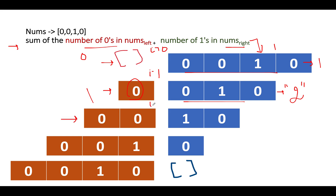Making the division at i equals 2, the left sub-array has [0, 0] and the right has [1, 0]. The number of zeros in the left is 2 and the number of ones in the right is 1. So 2 plus 1 gives a score of 3, which is the new maximum — higher than the previous one.